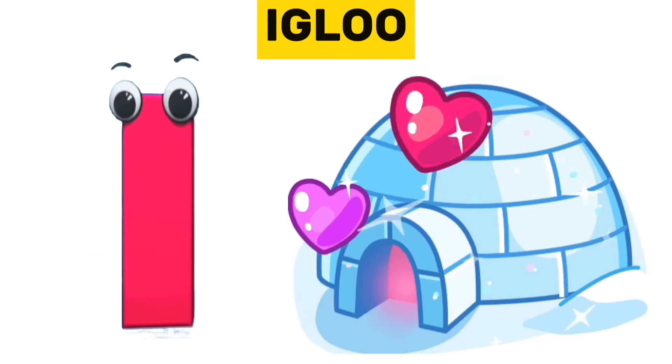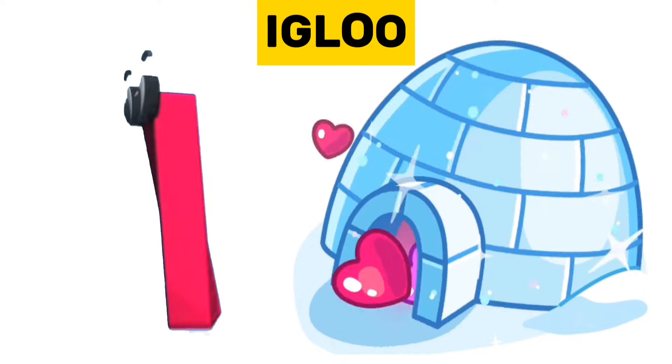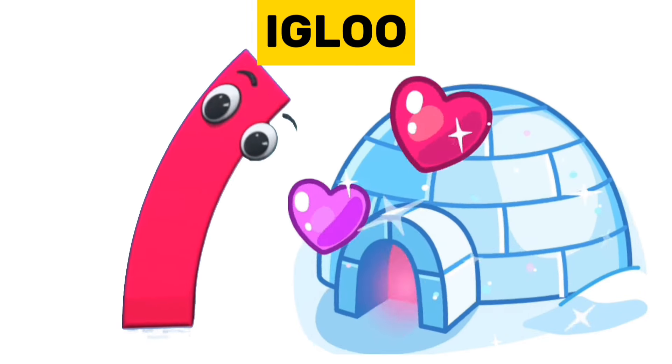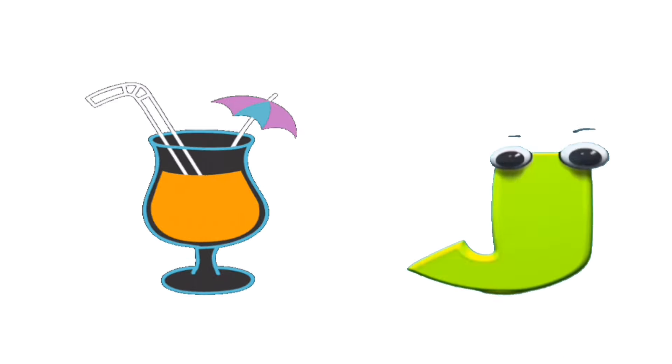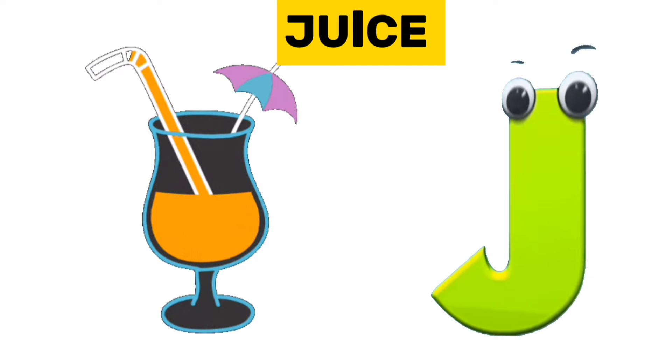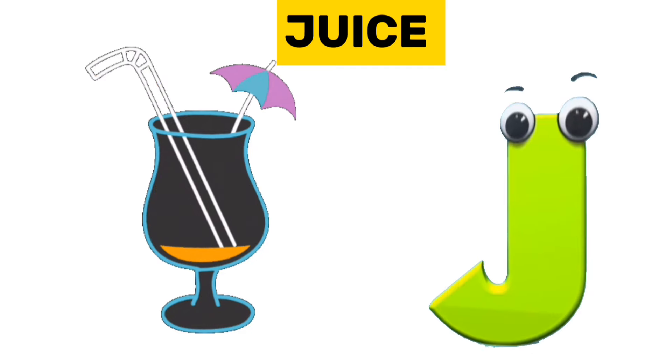I is for igloo. I, i, igloo. J is for juice. J, j, juice.